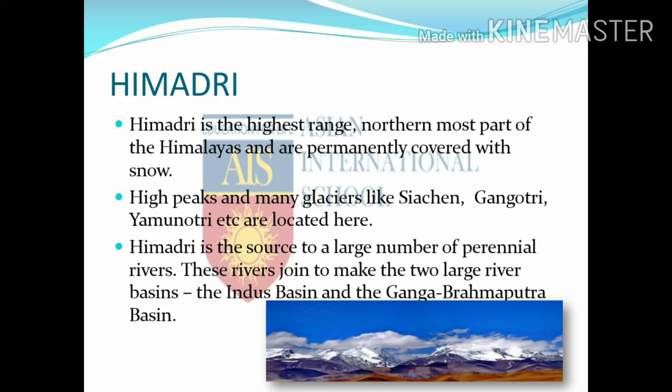Now we will discuss in detail about all the divisions. First, let us start with Himadri, or the Higher Himalayas. Himadri is the highest range and the northernmost part of the Himalayas, and is permanently covered with snow. High peaks and many glaciers like Siachen, Gangotri, Yamnotri etc. are located here. Himadri is the source of a large number of perennial rivers, which join to make two large river basins: the Indus Basin and the Ganga-Brahmaputra Basin.